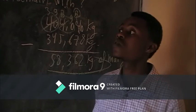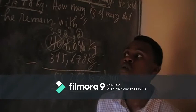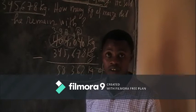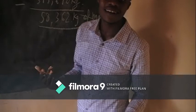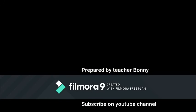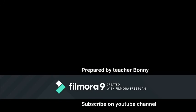Today I have covered addition and subtraction of large numbers up to 7 digits. We have seen how to add and how to subtract with borrowing or without borrowing, and addition with carrying and without carrying. See you next time.